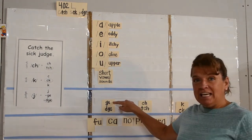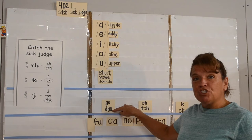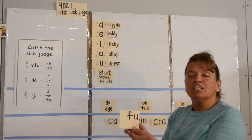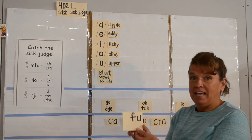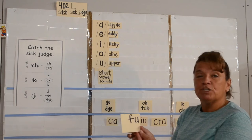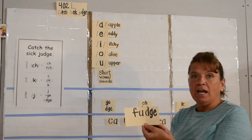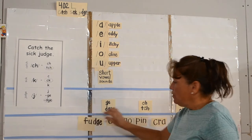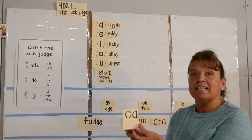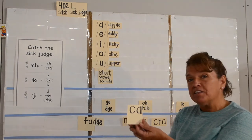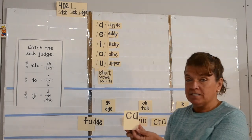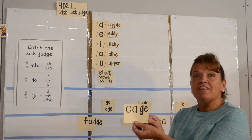We have the spellings G-E or D-G-E for the juh sound. The word is fudge — F-U-J. I do hear the juh sound at the end, and right in front of the juh sound I hear the uh sound, which is a short vowel sound, so I use the D-G-E. The word is cage — C-A-J. I do hear the juh sound at the end, but right in front of the juh sound I hear the sound A, which is not a short vowel sound, so I will use the G-E spelling.